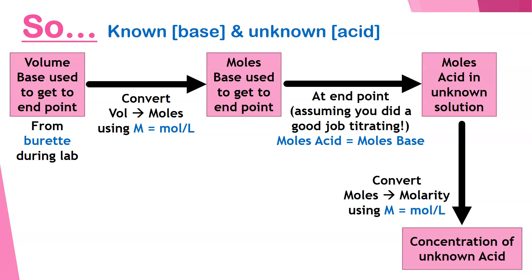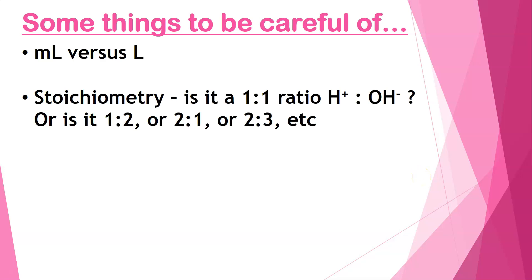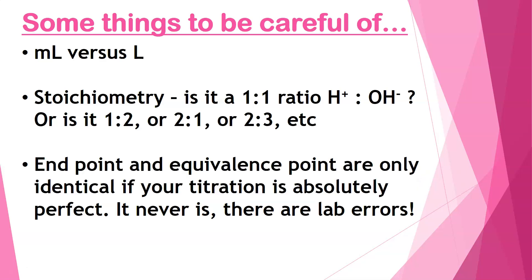There are some ways this gets more complicated. First, your burette measures in milliliters but molarity is in liters, so you will have to convert milliliters to liters in your calculations. The other complication is that it's not always a one-to-one ratio of acid to base. For example, magnesium hydroxide has two hydroxides per molecule, so you have to look at your stoichiometry — it may be a one-to-two, two-to-one, or even a two-to-three ratio. You have to look at your equation to see what the stoichiometry is. Also remember that your end point and equivalence point are technically not the same unless you live in a perfect universe, so you will have some percent error.